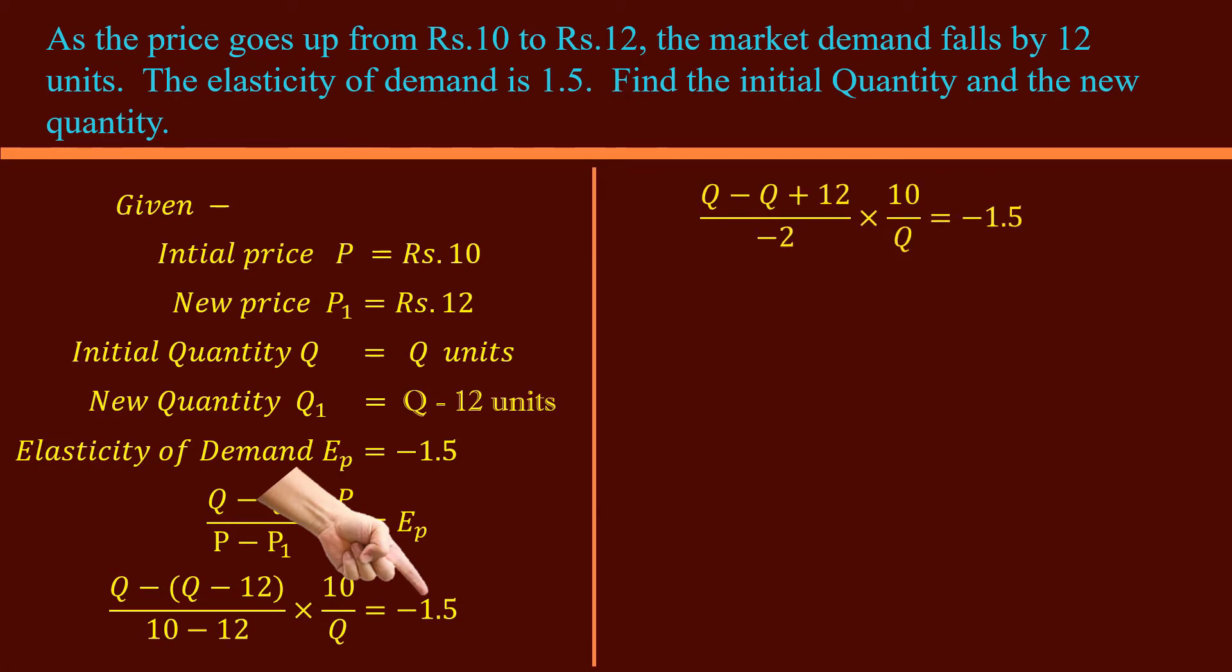Remove the bracket. Q, negative Q, positive 12. Note, when you remove the brackets, positive Q becomes negative Q. Negative 12 becomes positive 12. 10 minus 12, negative 2. 10 by Q equal to negative 1.5. Let us further simplify. Positive Q and negative Q get cancelled.